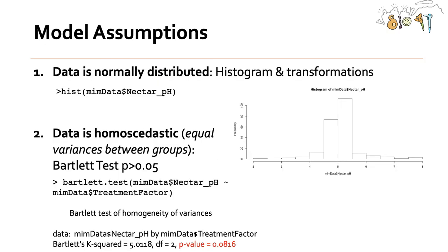The last thing to talk about with ANOVA is the assumptions of the model. There are two main assumptions. The first is that the data is normally distributed — we can determine this by making a histogram of the frequency of all the values of the continuous variable, and you can see this looks pretty normally distributed, not skewed in one direction or the other. The second is that the data is homoscedastic, meaning there are equal variances between groups. To test that, we use a Bartlett test, and if the P value of the Bartlett test is greater than 0.05, we can say there are equal variances between groups.